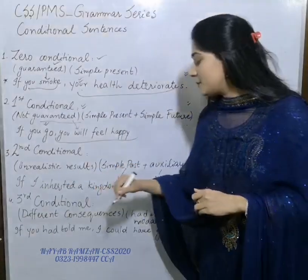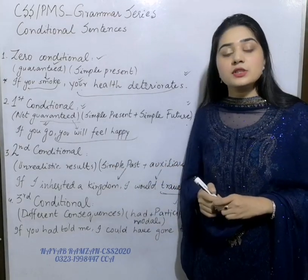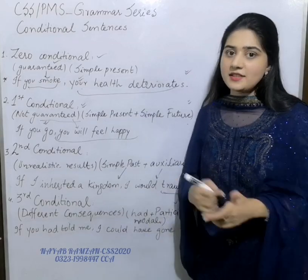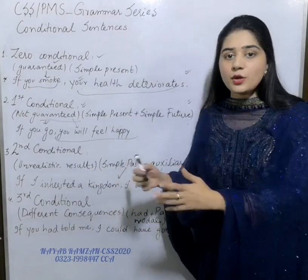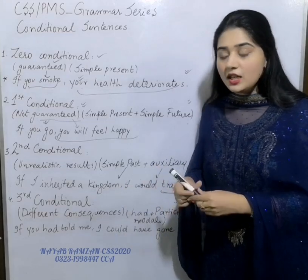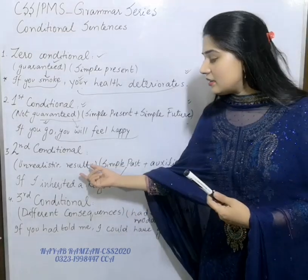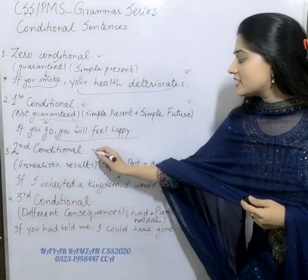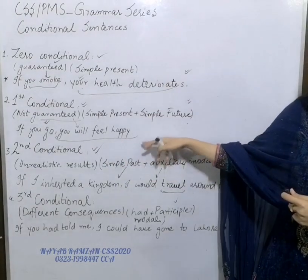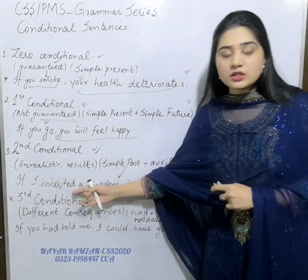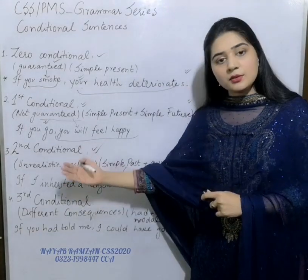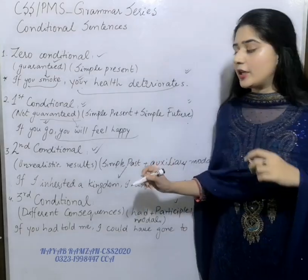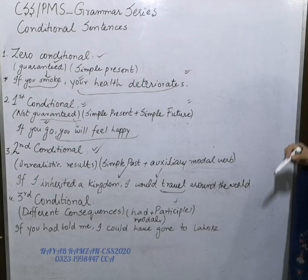In second conditional, the structure is simple past in the if-clause, and a modal verb with the base form in the result clause. The conditions are unrealistic — for example, 'If I was a king' or 'If I was a queen.' These are wishes or imaginary situations. Zero and first conditional can represent realistic wishes, but second conditional is used for unrealistic or highly unlikely conditions.